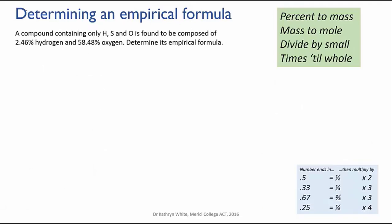Let's try another. A compound containing only hydrogen, sulphur and oxygen is found to be composed of 2.46% hydrogen and 58.48% oxygen. Determine its empirical formula. First, write out the percentages as a ratio. Note that we haven't been given the percentage of sulphur but we can work it out because the percentages must add up to 100%.